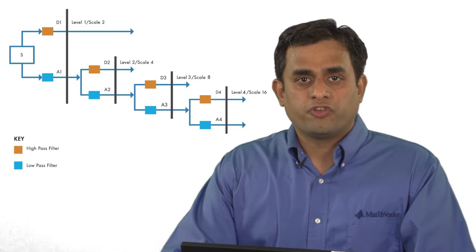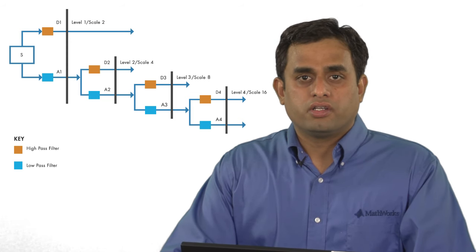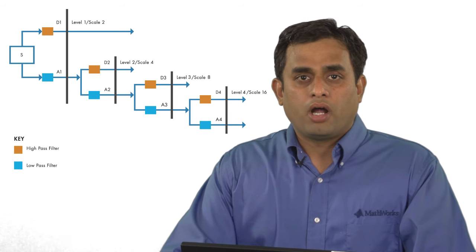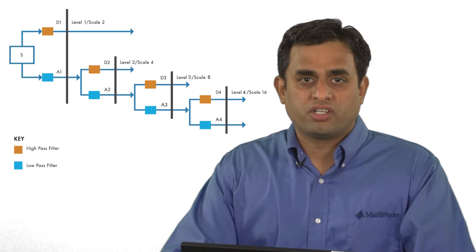The first level detail coefficients captures the high frequencies of the signal. Most of the high frequency content is comprised of the noise present in the signal. However, part of the high frequency component is made up of abrupt changes in the signal. There are times when these abrupt changes carry meaning and you would want to retain this information while removing the noise.